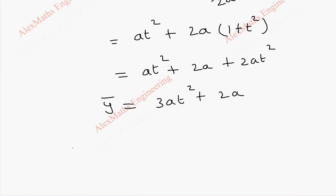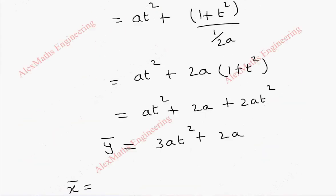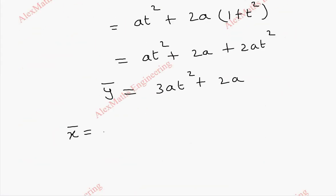So we got x-bar and y-bar — this is the center of curvature. x-bar is minus 2at³, and y-bar is 3at² plus 2a.